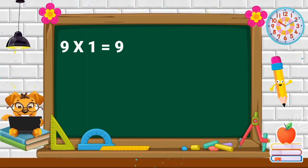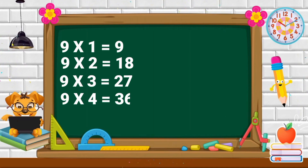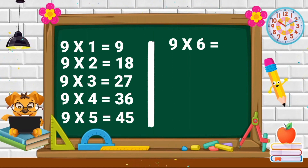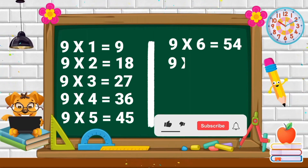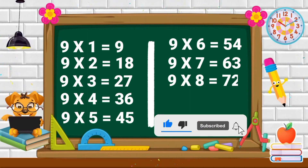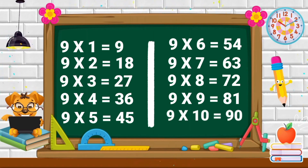Repeat again. 9 ones are 9. 9 twos are 18. 9 threes are 27. 9 fours are 36. 9 fives are 45. 9 sixes are 54. 9 sevens are 63. 9 eights are 72. 9 nines are 81. 9 tens are 90.